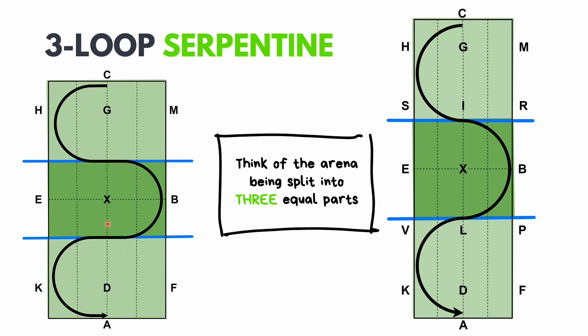This trick can make it much easier to visualize how big your loops need to be, because it's much easier to stand in the arena and separate it into three equal parts than to plan out a 13 meter circle. If you're having difficulty ensuring all your loops are the same size, this is a handy tip you may find useful.